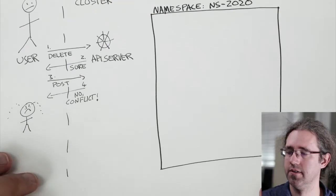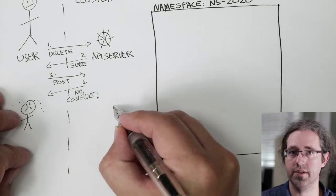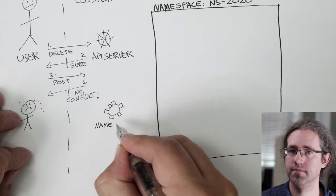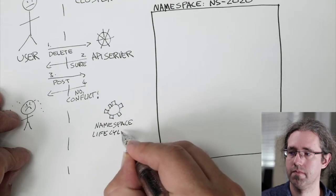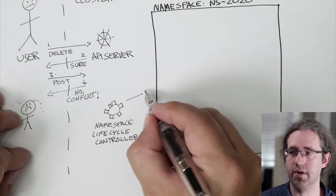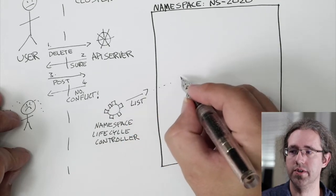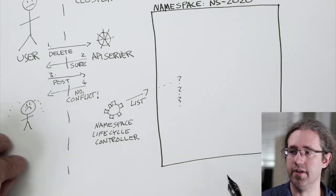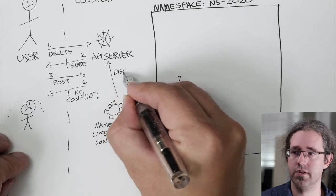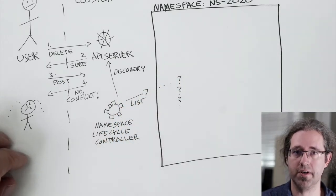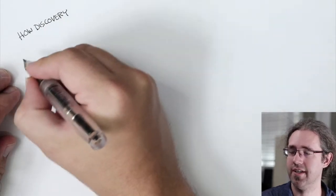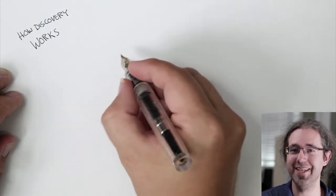The component in Kubernetes responsible for removing this finalizer is in the controller manager — it's the namespace lifecycle controller. Its job is to watch namespaces that have begun the deletion process, ensure that they are empty, that all the resources inside them have been deleted, and then remove that finalizer. The namespace lifecycle controller is the villain. Now to list the resources inside of a namespace, you need to know which types of resources there are to be listed. The process of figuring that out is called discovery. And you might be asking yourself: how does discovery work? I'm about to tell you.